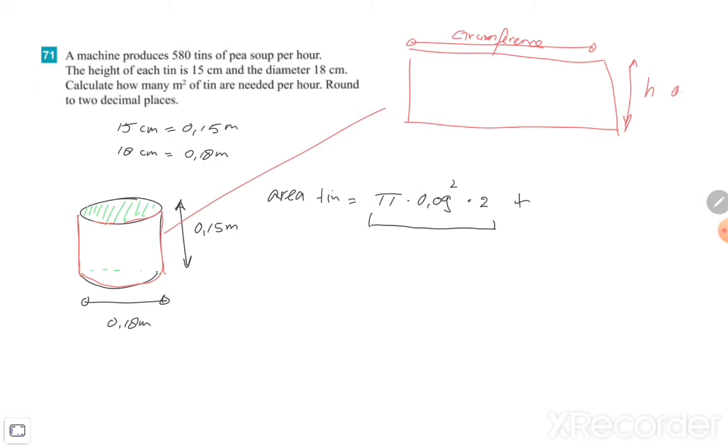So the height was 0.15 meters and the circumference was pi times the diameter. So that's 0.18. So the area here, the area is pi times 0.18 multiplying with the height so 0.15. And we're gonna add that calculation there because we need to add that rectangle.